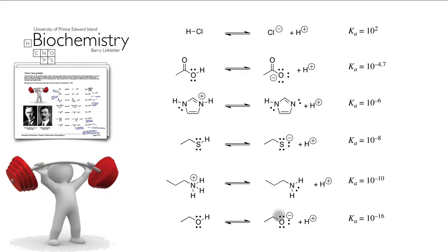We often think of amines and alkoxides as bases, but in more advanced chemistry we always think of things from the acid side — the Ka of the acidic form, not the Kb of the base. A very small Ka means the compound is very unlikely to give up its proton, which means its basic form is a strong base. If you have a very small Ka, the basic form must be a strong base.